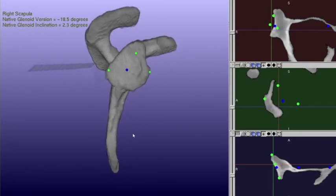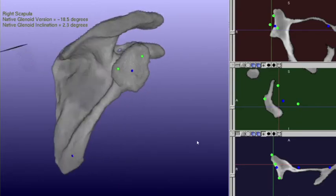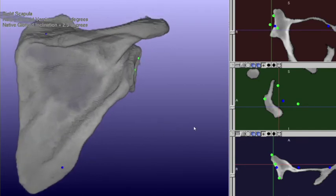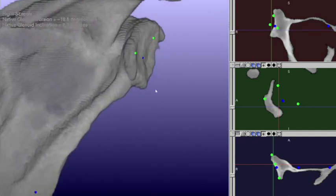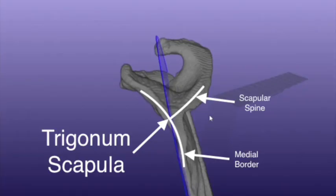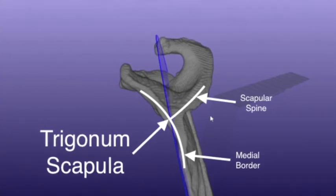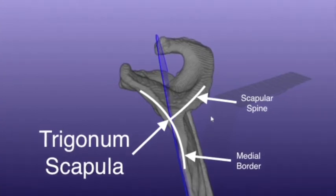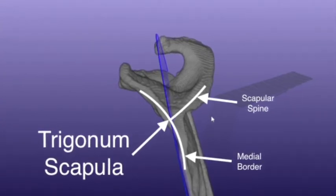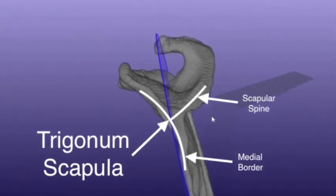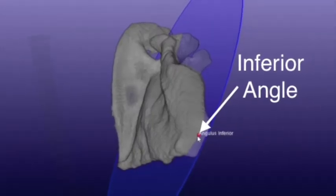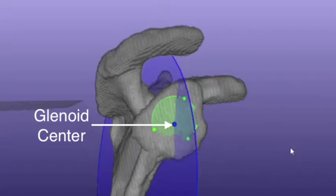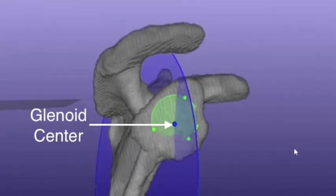Once we've converted the images to 3D, the first step is to define the plane of the scapular body. This is made by three points: the first is the trigonum scapula, which is the confluence of the scapular spine and scapular body; the second is the inferior angle; and the third is the center of the glenoid.